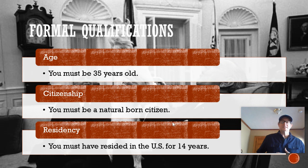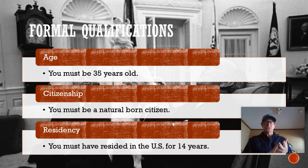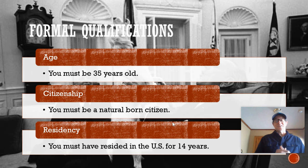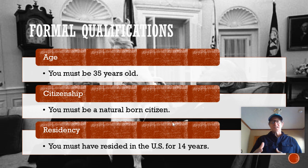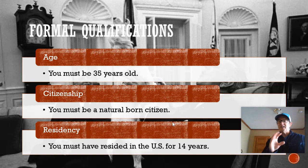The formal qualifications of the president are the constitutional qualifications. You're familiar with constitutional qualifications from when we studied Congress — they come in threes: age, citizenship, and residency. In Article II, it specifies that the president needs to be 35 years old. As far as citizenship, the Constitution requires what we call a natural born citizen. The residency requirement is that you must have physically resided in the United States for 14 years.